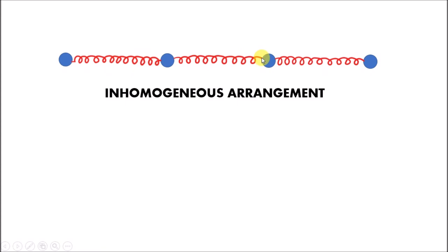For such a linear arrangement, one unit would be one atom followed by its spring. The length of this unit would be, let's say, a. The entire mass of this unit is concentrated at one end where the atom is attached; for the rest of the length there is no mass. So the mass per unit length along the unit is non-uniform, and such an arrangement is called an inhomogeneous arrangement.